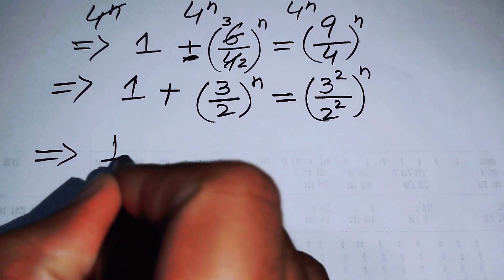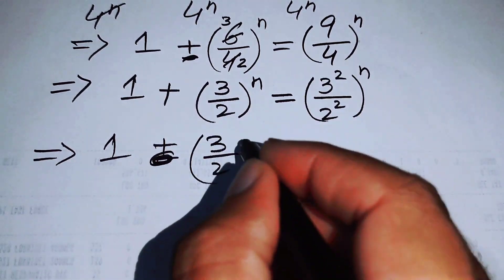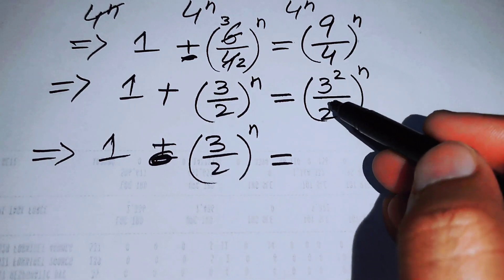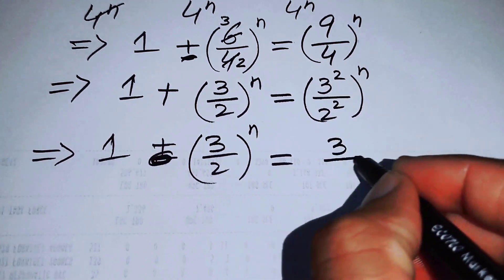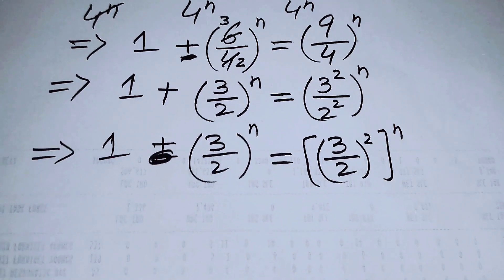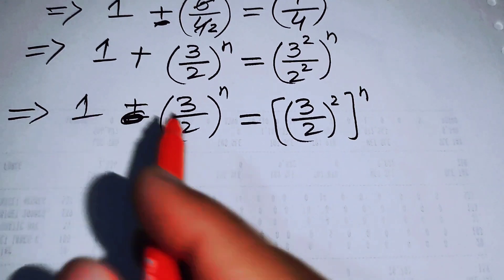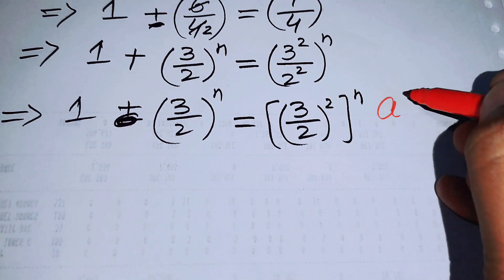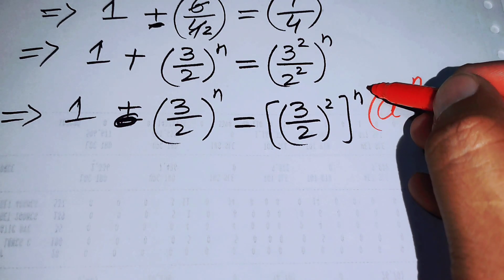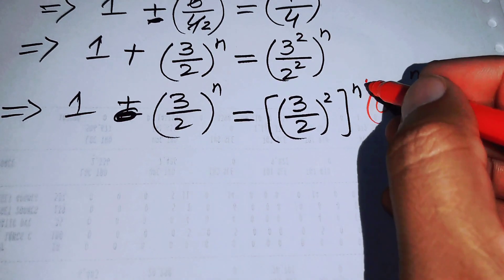Applying the exponential laws, we get 1 plus (3/2)^n equals (3²/2²)^n. We then combine the exponents of 3 squared over 2 squared and write it as (3/2)² to the power of n. We also recall the exponential law: a to the power of m to the power of n equals a to the power of m times n.